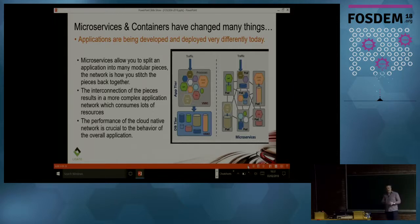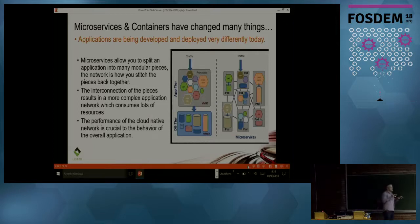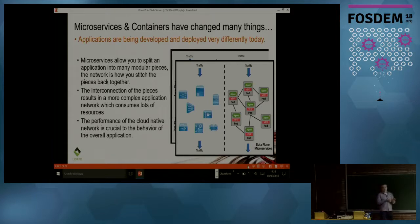We have thousands of servers, each one running hundreds of applications, different pods coming up and going down. As we disaggregate apps into smaller and smaller pieces, naturally there's going to be more and more traffic flowing between those components. The network itself — the danger is that becomes your bottleneck.